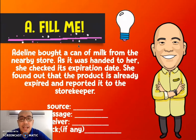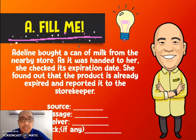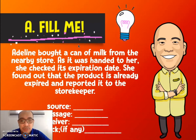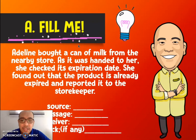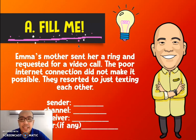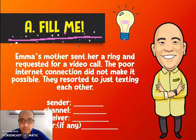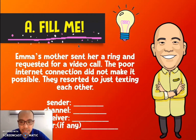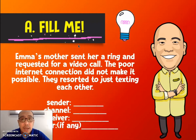The second situation: Adeline bought a can of milk from the nearby store. As it was handed to her, she checked its expiration date. She found out that the product is already expired and reported it to the storekeeper. Who is the source, what is the message, who is the receiver, and what is the feedback, if there is any? The last scenario for the first activity: Emma's mother sent her a ring and requested a video call. The poor internet connection did not make it possible, so they resorted to just texting each other. Who is the sender, what is the channel being used, who is the receiver, and what is the carrier?